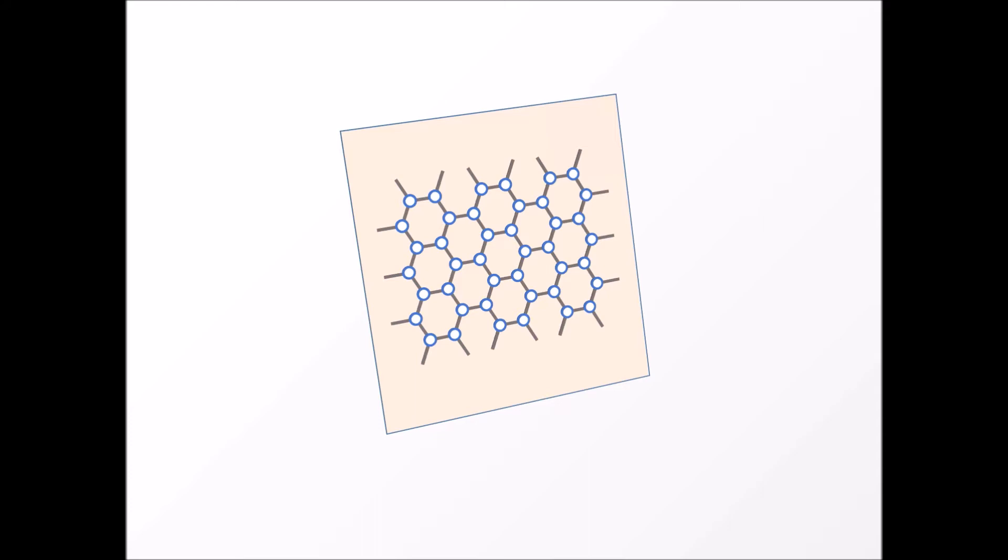In our work we consider a two-dimensional topological insulator. As an example we take the Haldane model which is a particular instance of the anomalous quantum hall effect. This model is defined on a honeycomb lattice occupied by fermions with complex hopping amplitudes.